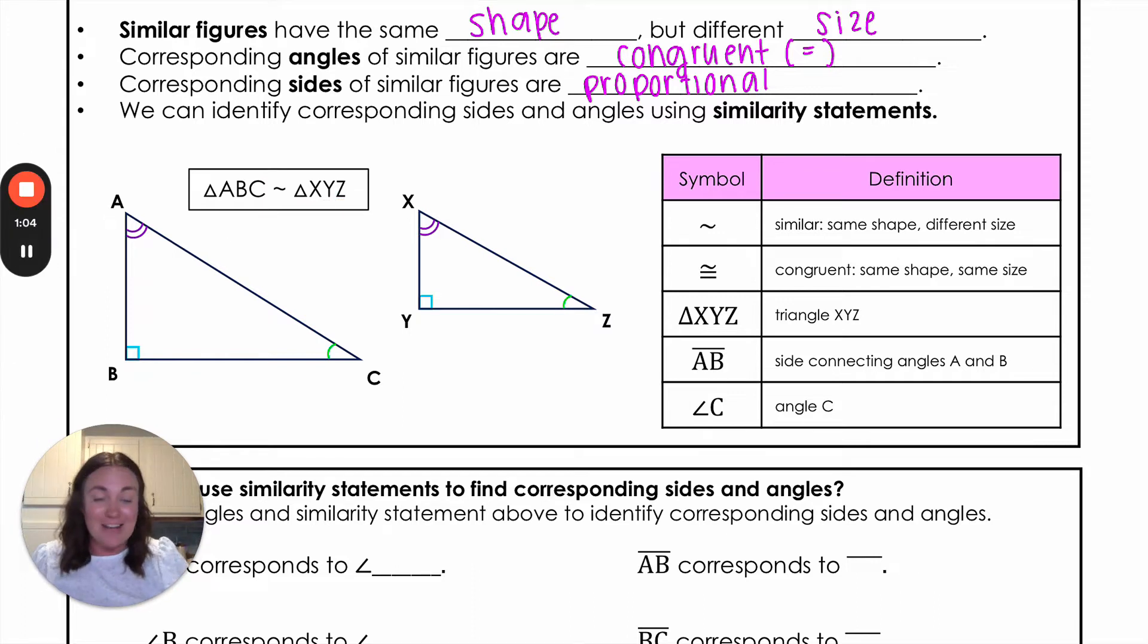While we're at it let's talk about some other symbols and how to read them. You saw here this little squiggle is called similar, so this is how we would say similar, same shape different size. When we have that squiggle over an equal sign this is called congruent. That's where you'd have the same shape and the same size. When we want to write a triangle we put this little triangle shape in front of it, so I'd read that as triangle XYZ.